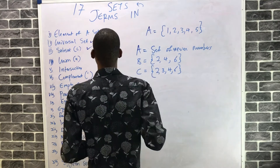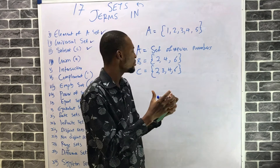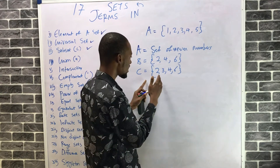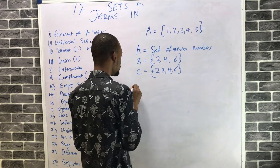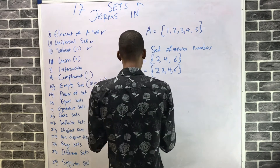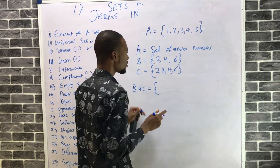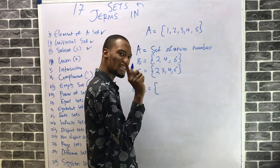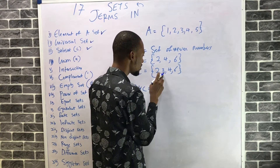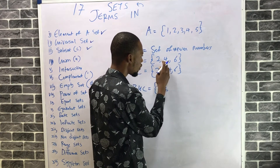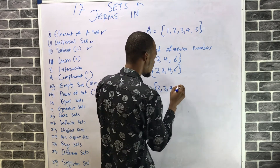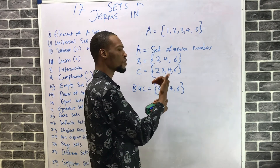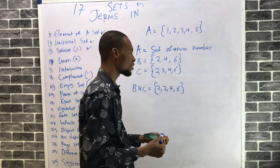Now look at union of a set. Union means adding elements of two sets together without repeating any number. You arrange values in ascending order. For example, taking sets B and C: 2 appears in both, so you take it only once; then 3, then 4, then 6. Union means merging two sets and arranging the values in ascending order without repeating any of them.